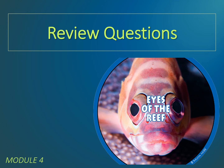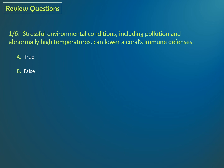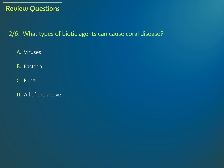Question 1: Stressful environmental conditions, including pollution and abnormally high temperatures, can lower a coral's immune defenses. A for true or B for false? If you selected A for true, you are correct. Question 2: What types of biotic agents can cause coral disease? Is it A, viruses; B, bacteria; C, fungi; or D, all of the above? If you said D, all of the above, you are correct.